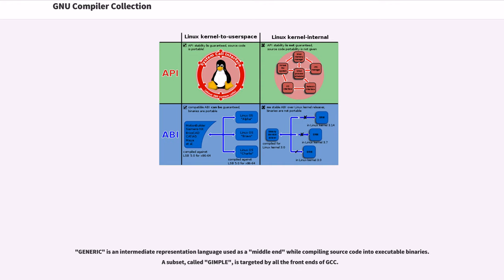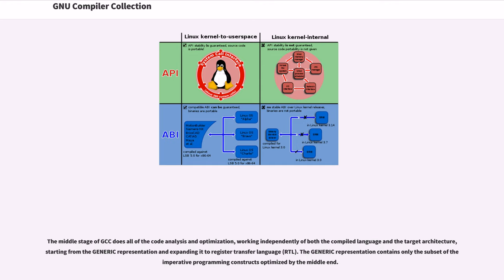Other front-ends instead have different intermediate representations after parsing and convert these to Generic. In either case, the GIMPLifier then converts this more complex form into the simpler SSA-based GIMPL form that is the common language for a large number of powerful language and architecture-independent global, function-scope optimizations. Generic is an intermediate representation language used as a middle-end while compiling source code into executable binaries. A subset, called GIMPL, is targeted by all the front-ends of GCC. The middle stage of GCC does all of the code analysis and optimization, working independently of both the compiled language and the target architecture, starting from the generic representation and expanding it to register transfer language, RTL.